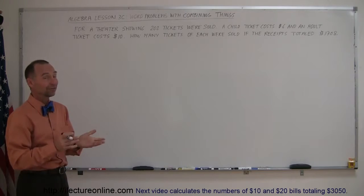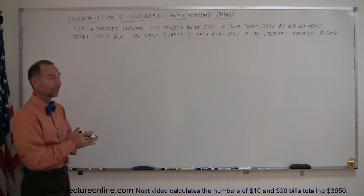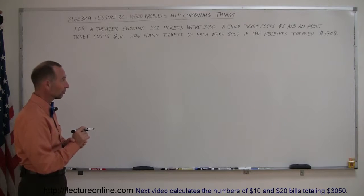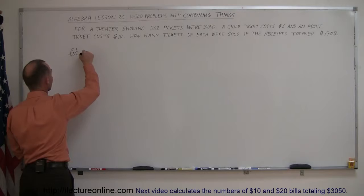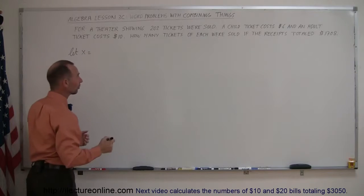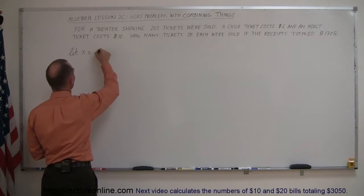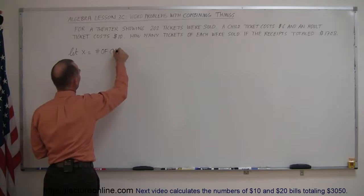All right, let's start out by defining the number of tickets sold for adults and the number of tickets sold for children. So, let X equal... Now, we can pick either one, so let me say that the number of child tickets sold.